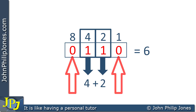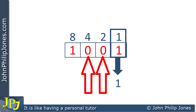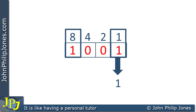Let's look at another example. I know this is nine. There is a one in the unit position so I write that down, a zero in the two and four so I don't write those down, but there's a one in the eight position so I write that down. Adding those together gives the result of nine.